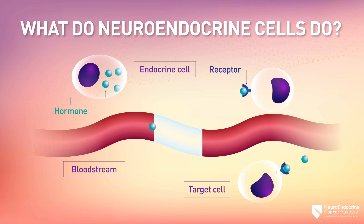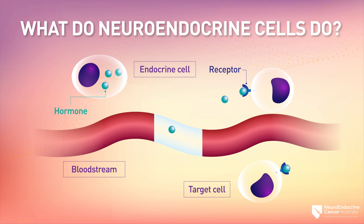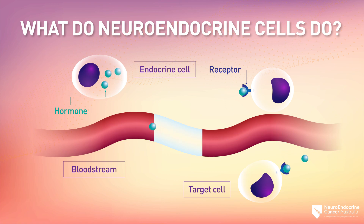If the neuroendocrine system is the supervisor, the neuroendocrine cells are the workers. Neuroendocrine cells have many functions, which include controlling the release of digestive enzymes to break down food, how fast food moves through the gastrointestinal tract, air and blood flow through the lungs, and much more.